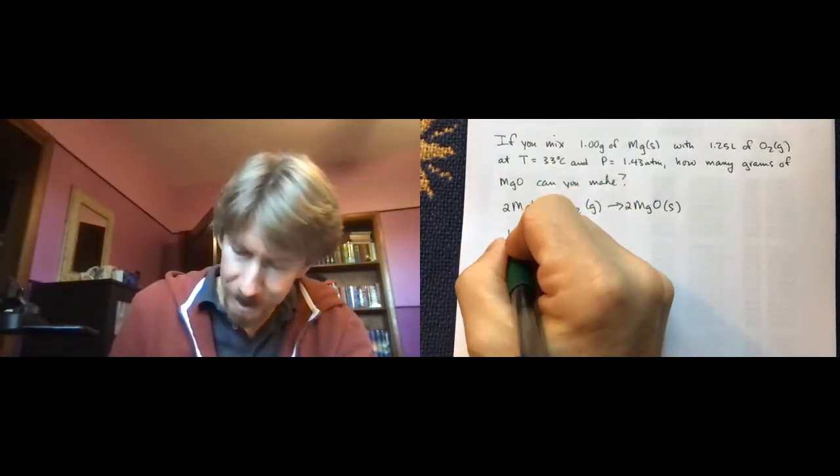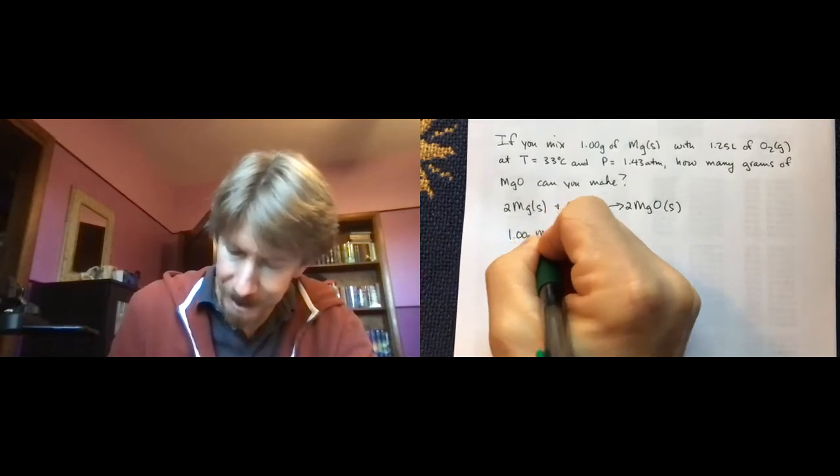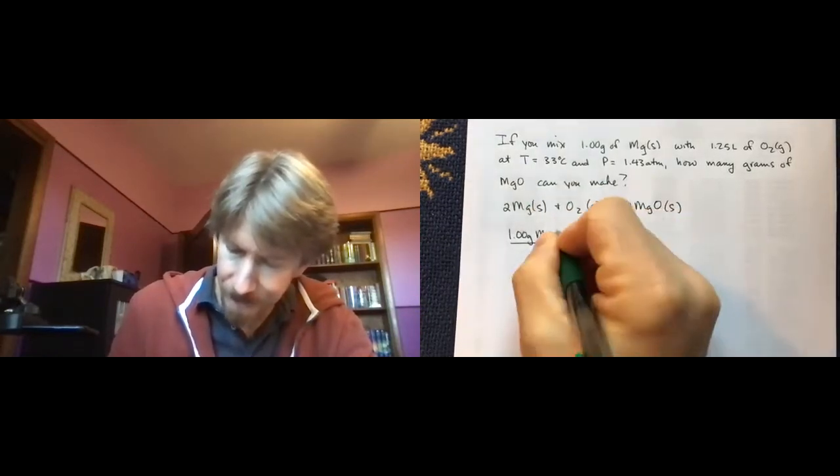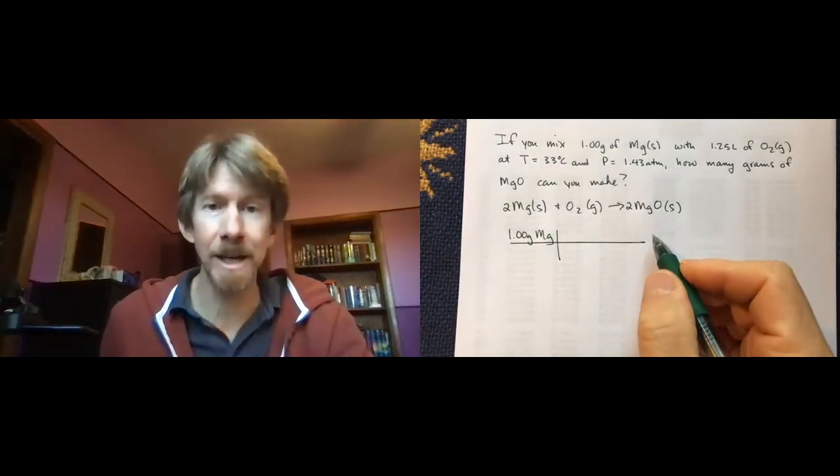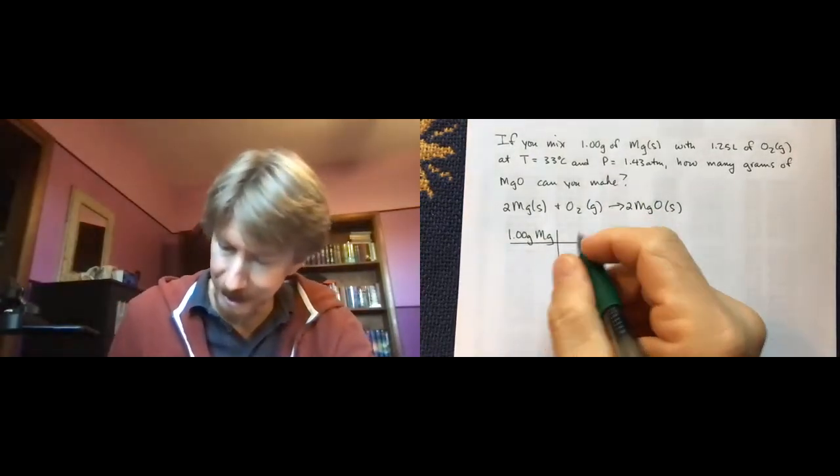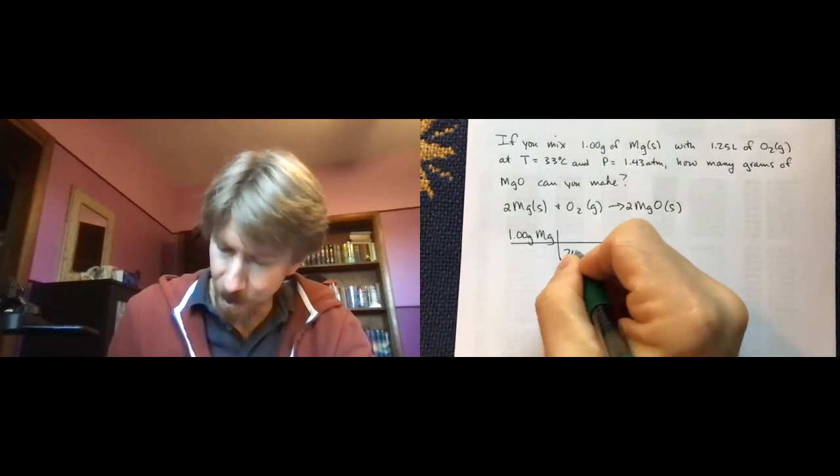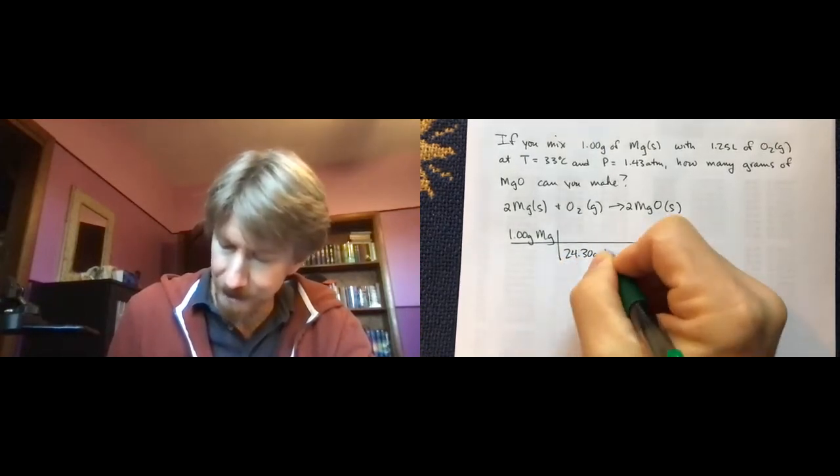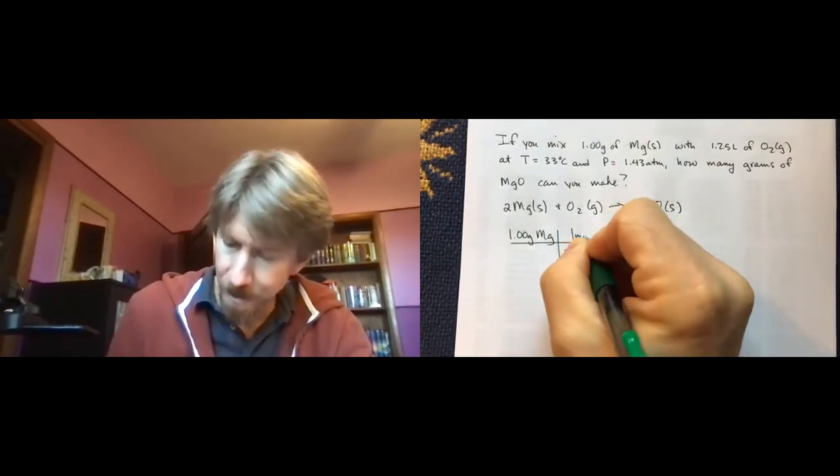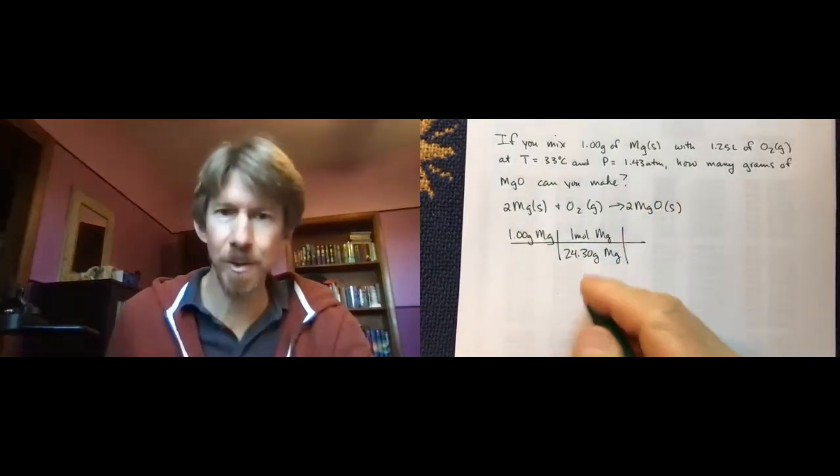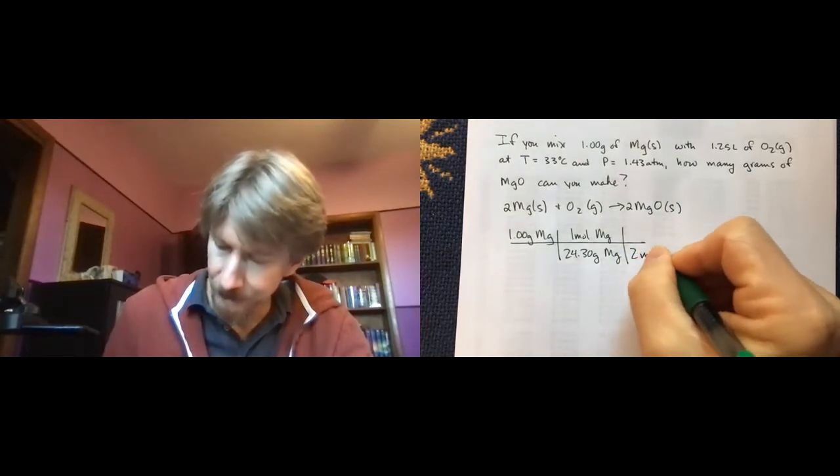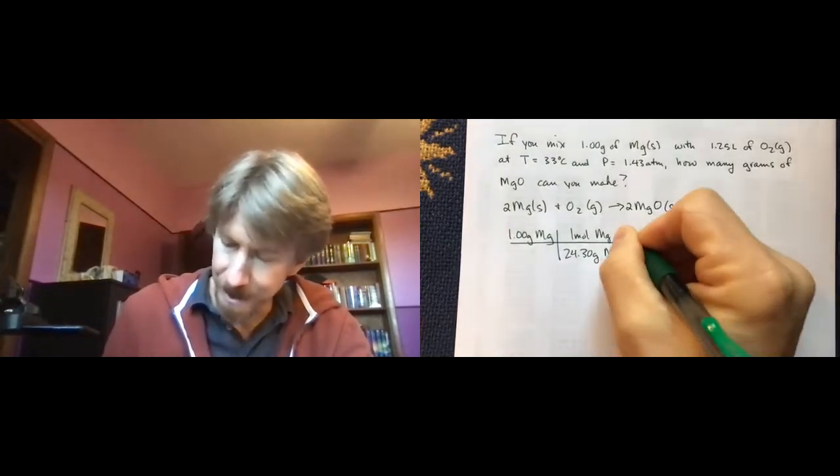I'm actually going to start with my 1.00 grams of magnesium, convert that into moles, and then eventually grams of magnesium oxide. Let's see, 24.30 grams, 1.00 grams. Then it's 2 to 2 for magnesium, 2 magnesium oxide.